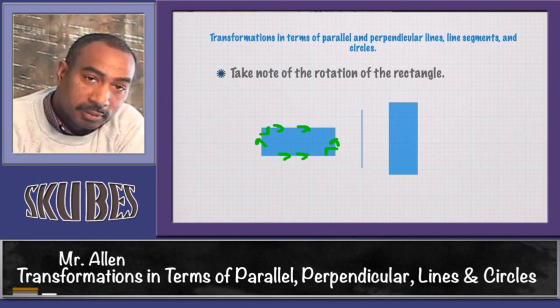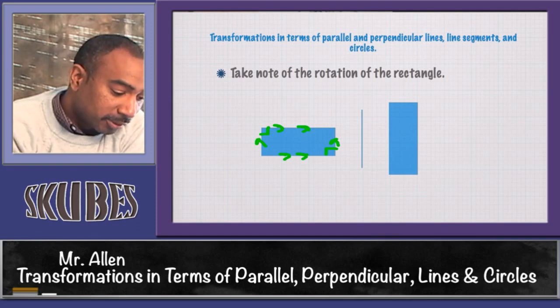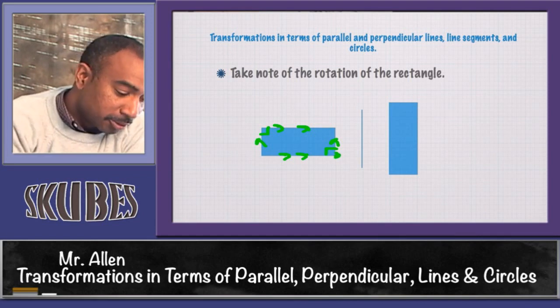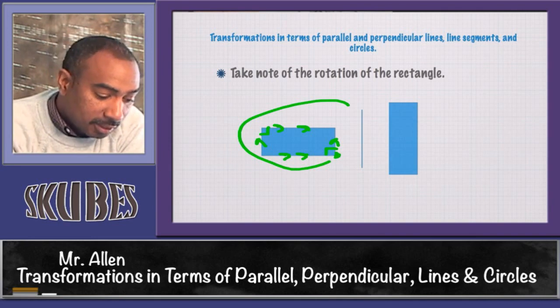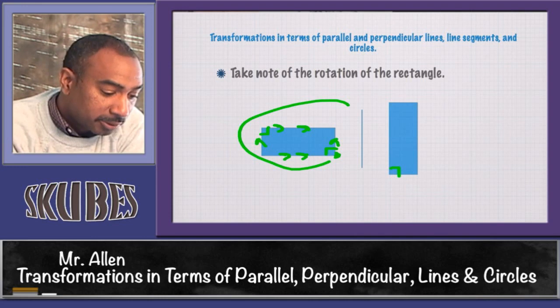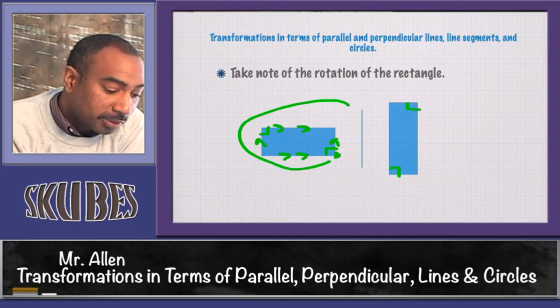When you spin it around a certain point, let's say we spin from this point, we turn it around and have it flip up. The angles are still going to be 90 degrees and it doesn't change the property of the parallel lines. This will still be parallel.